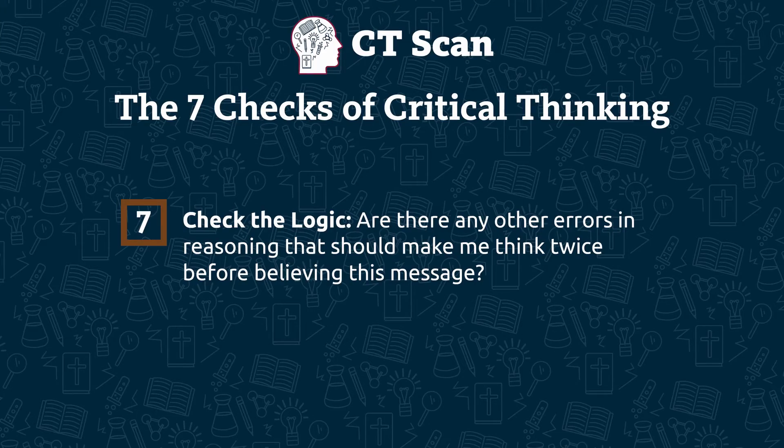Finally, for check number seven, check the logic. We can identify circular reasoning in arguments that transitional fossils are evidence of evolution, because the word 'transitional' itself assumes evolution is happening. Even saying that evolution predicts intermediate forms and intermediate forms exist, therefore evolution must be true — that's using the affirming the consequent fallacy discussed back in episode 47. Ultimately, a little biblical critical thinking reveals that, far from being proof of evolution, intermediate-looking fossils often cause problems for evolution, yet are consistent with biblical interpretations.